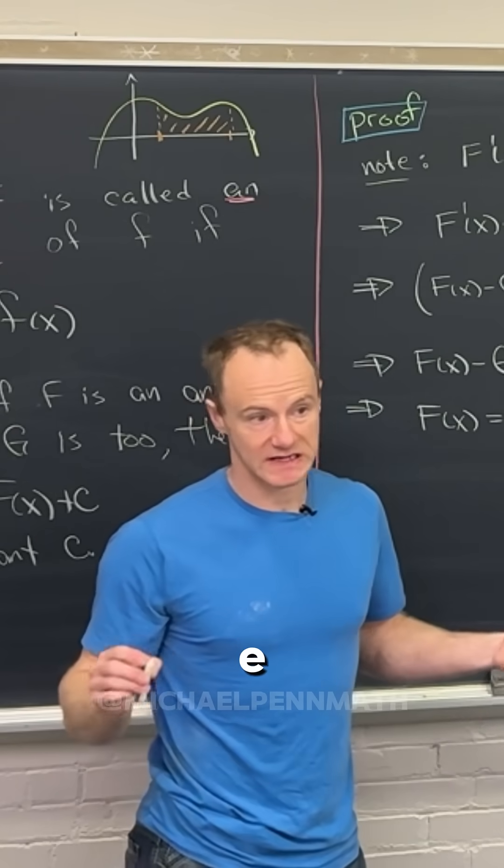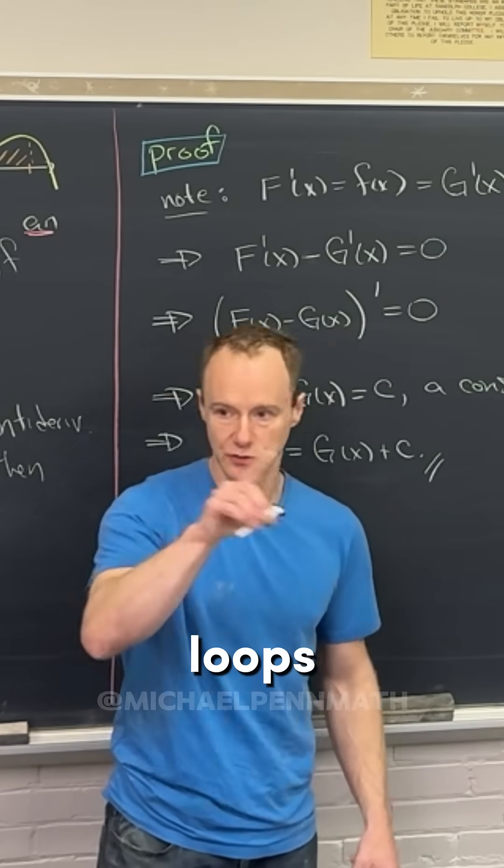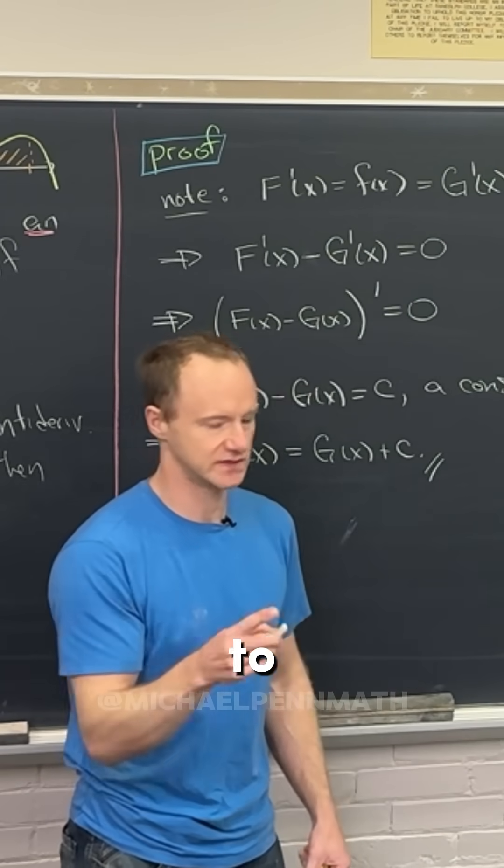So whose derivative is e to the x? Yeah, e to the x. Like if you reverse the arrow there, it just loops back on itself. So if you reverse the arrow of something going from itself to itself, nothing happens.